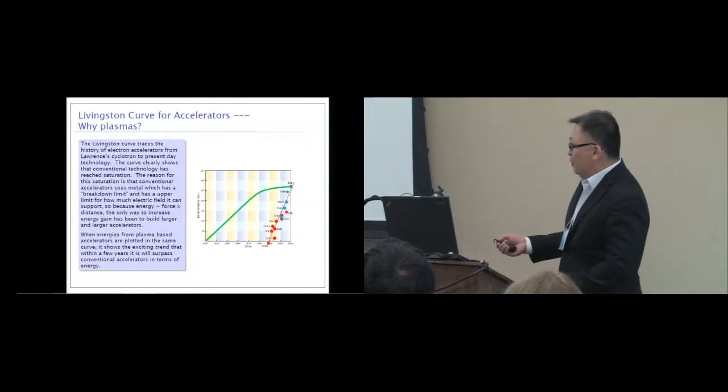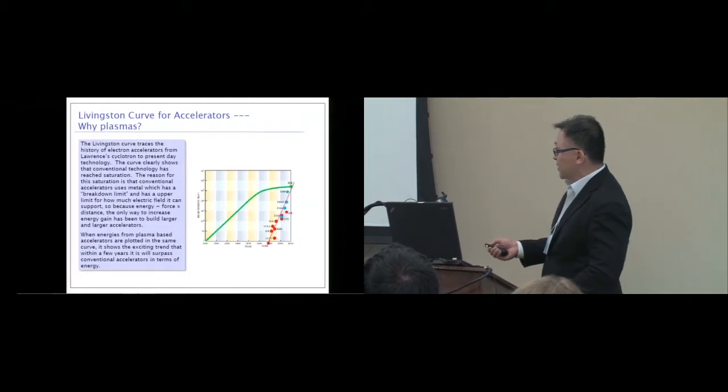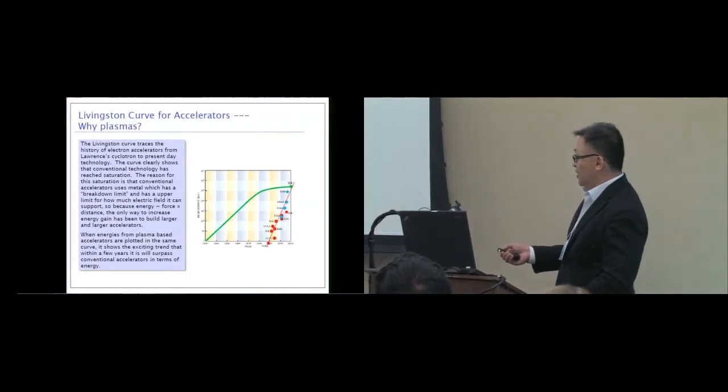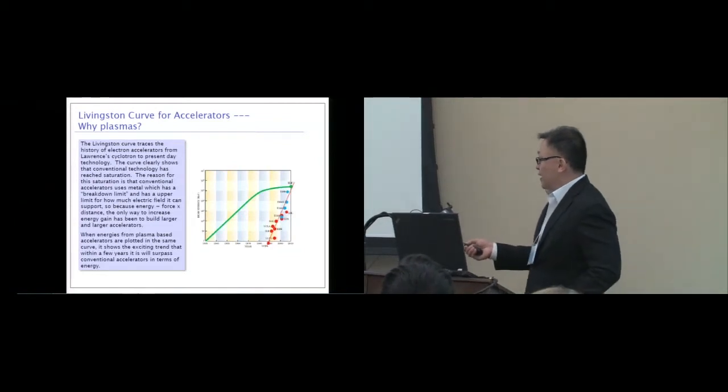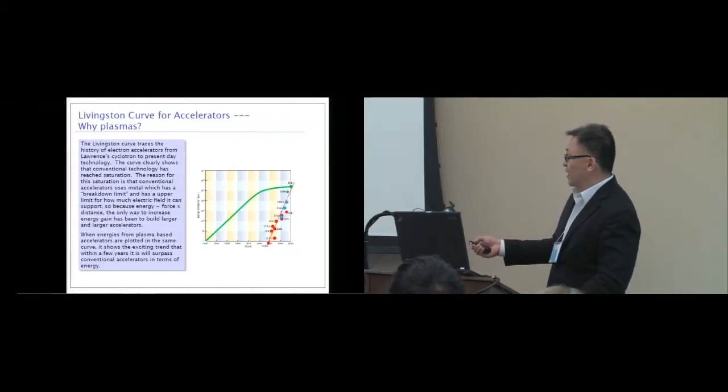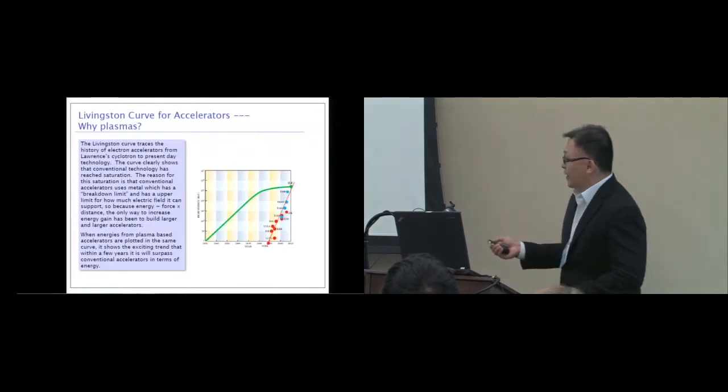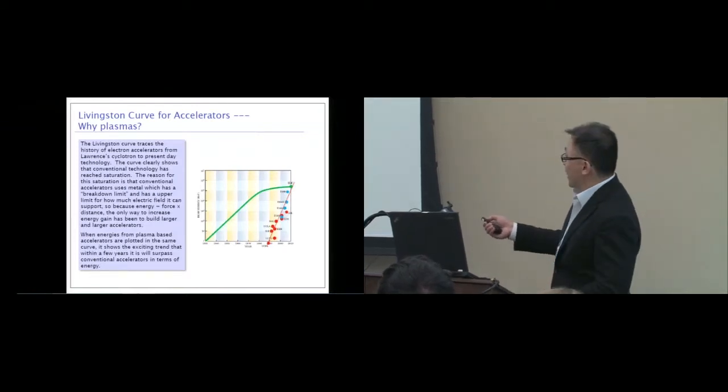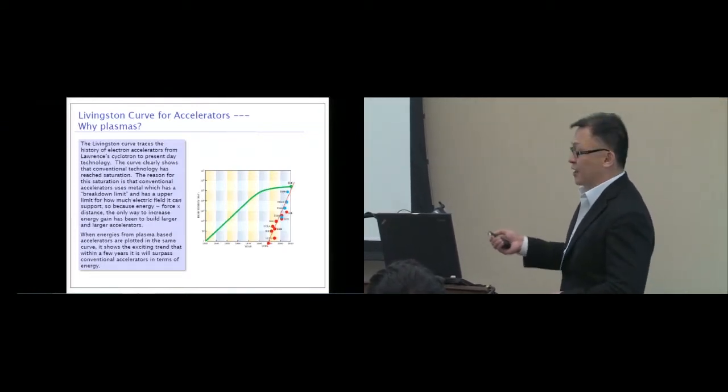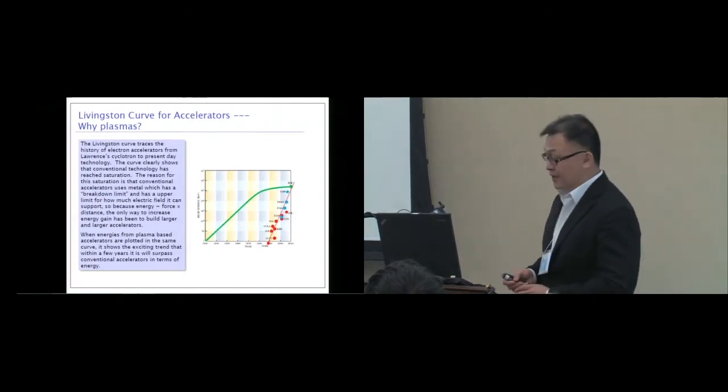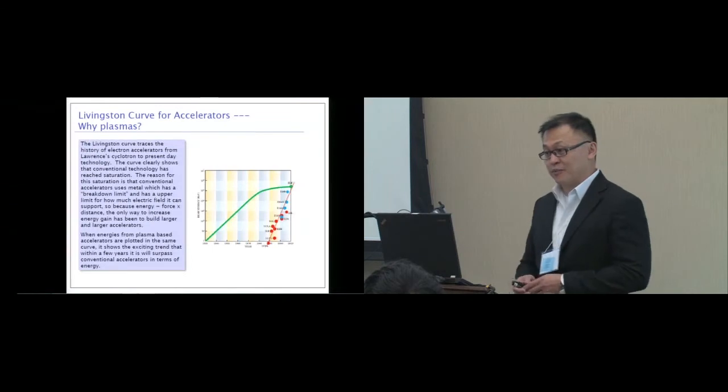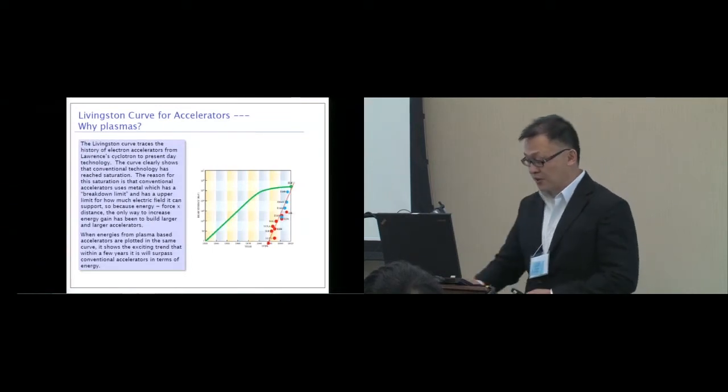The idea of a plasma-based accelerator was proposed in 1980. Experiments started around 1990. You can see the same curve now plotted since the beginning of plasma-based accelerators in 1990 all the way to the present day. The plasma-based accelerator has already caught up to conventional accelerators in terms of energy, but in terms of beam quality and so forth, we're not quite there yet.